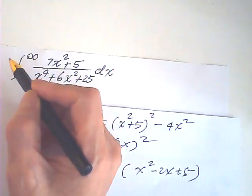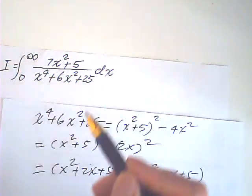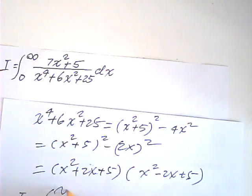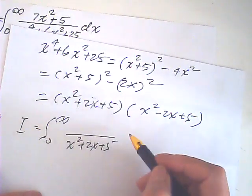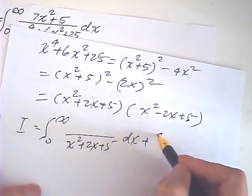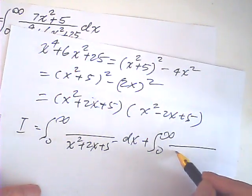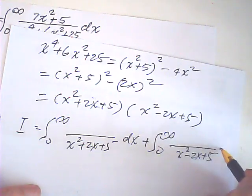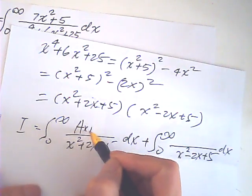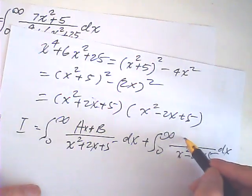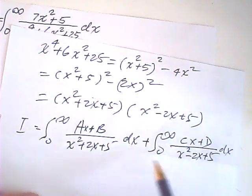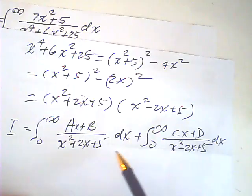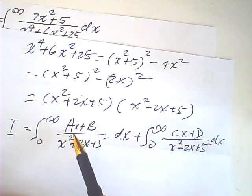Then the integral could be written as x squared plus 2x plus 5, dx plus this one, x squared minus 2x plus 5, dx. This is ax plus b, this is cx plus d. Then I use partial fractions to determine the coefficients a, b, c, d.